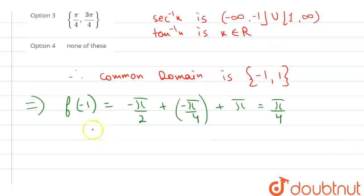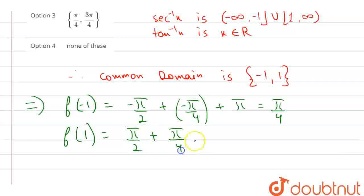Therefore, now putting x as plus 1. Sin inverse 1 is pi by 2, tan inverse 1 is pi by 4, plus sec inverse 1 is 0. So this comes as 3 pi by 4.